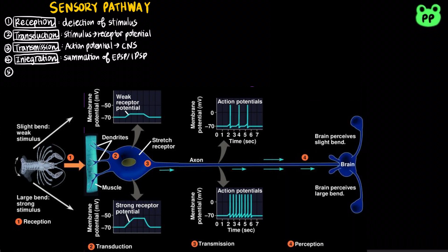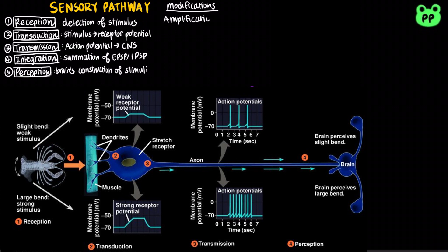Lastly, a perception is formed, which is the brain's construction of stimuli. Sensory pathways can be modified in two ways. It can undergo amplification, which is the strengthening of stimulus energy by cells in sensory pathways.